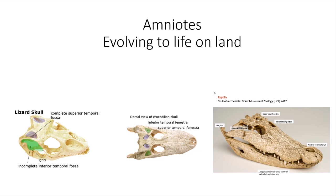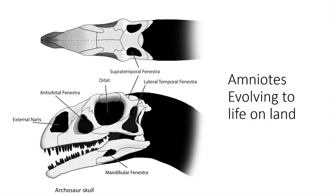So these are sauropsida, and in the subdivision diapsida — 'di' meaning two — they have two temporal fenestra. This is another archosaur skull, and you can see the supratemporal and the lateral temporal fenestra. They also have an antorbital fenestra between the eye and the nose. And look on the bottom of the jaw — you see what's called the mandibular fenestra. That is a tiny opening shared by all archosaurs. Even birds have a mandibular fenestra, and that's one of the reasons why we know that birds are related to dinosaurs and alligators and crocodiles.